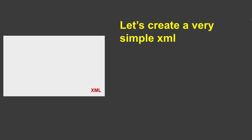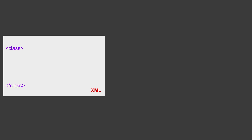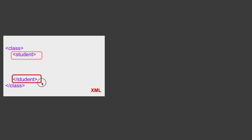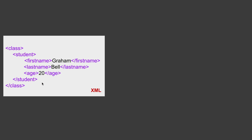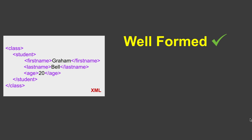Let me first create a very simple XML. I have created an element 'class' — this is the start tag and end tag. Under class I have created a child element 'student' with a start and end tag, and under student we have first name, last name, and age. So this is a very simple XML.